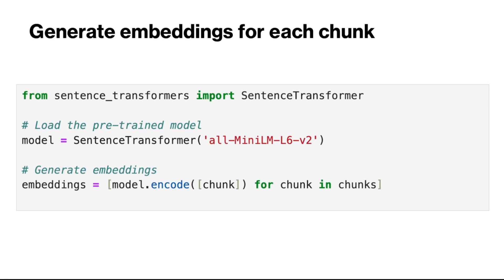Now we are ready to generate the embeddings for each chunk. For this example, we used a sentence transformer using the model named all-MiniLM-L6-v2. Then we call model.encode on each chunk and get an embedding vector for them.